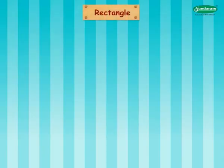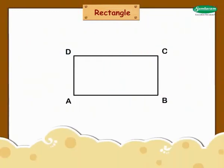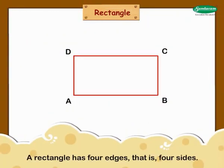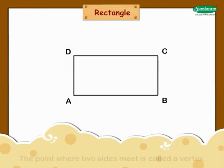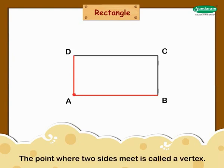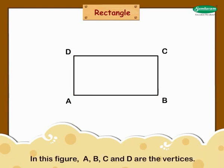Rectangle. A rectangle has four edges, that is, four sides. The point where two sides meet is called a vertex. In this figure, a, b, c, and d are the vertices.